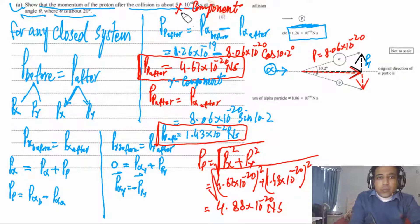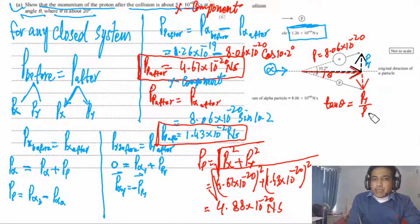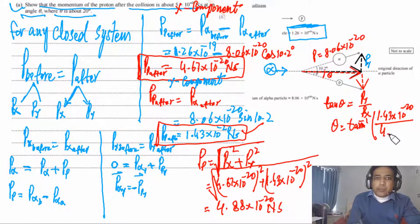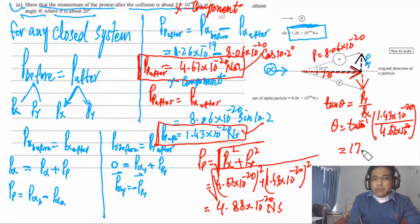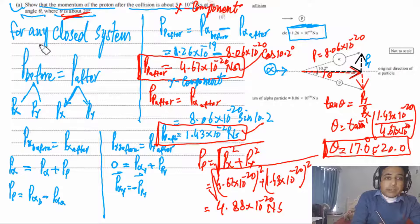Part b: deduce whether the collision was elastic. The condition for an elastic collision is that kinetic energy before equals kinetic energy after. Using KE = p²/(2m): KE of alpha before = (1.26 × 10⁻¹⁹)² / (2 × 6.64 × 10⁻²⁷).